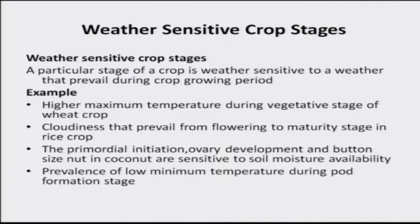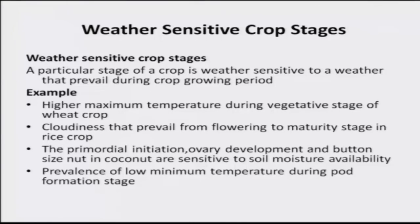Higher maximum temperature during vegetative stages of wheat crop affects yield, as mentioned earlier. Cloudiness that prevails from flowering to maturity in rice crop is very important — from flowering to 15 days before harvest, there must be sunny days. The radiation must be available to the rice crop to make the grains highly productive; otherwise, yield gets affected. In primordial initiation, ovary development, and button stage in coconut are sensitive to soil moisture availability, whether from rainfall in dryland or from groundwater in irrigated conditions across arid, semi-arid, sub-humid, humid, or perhumid climates.